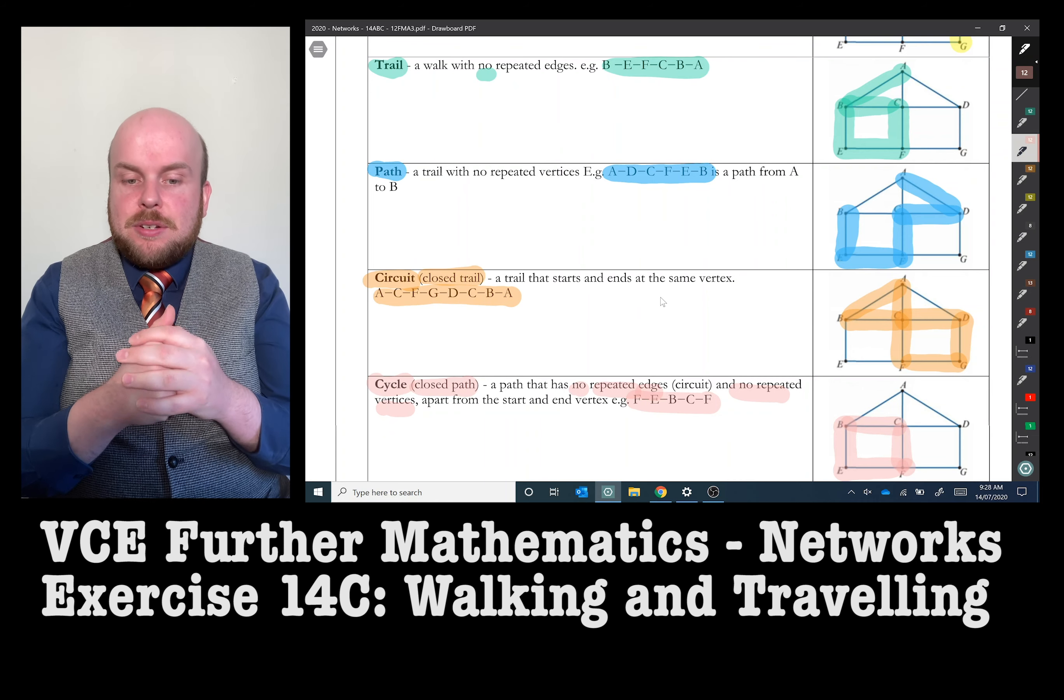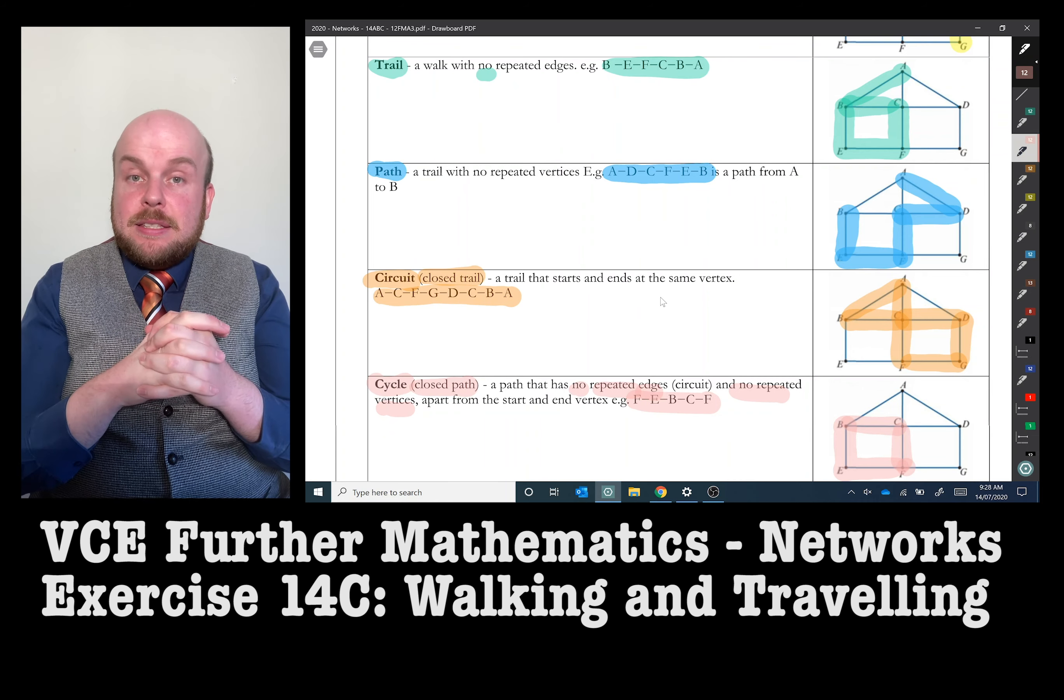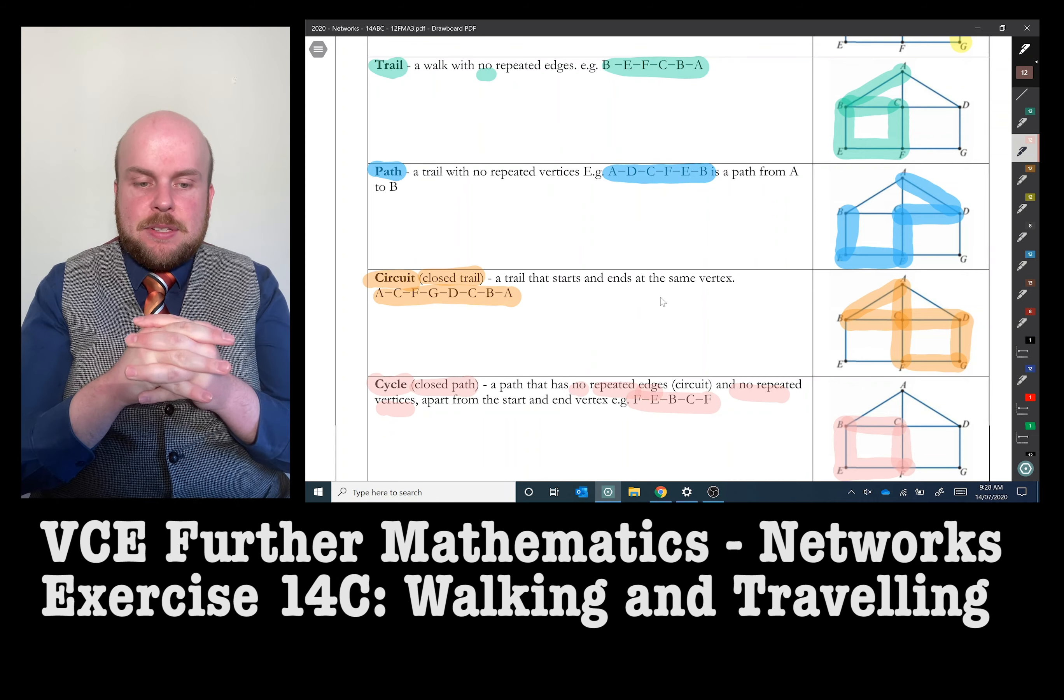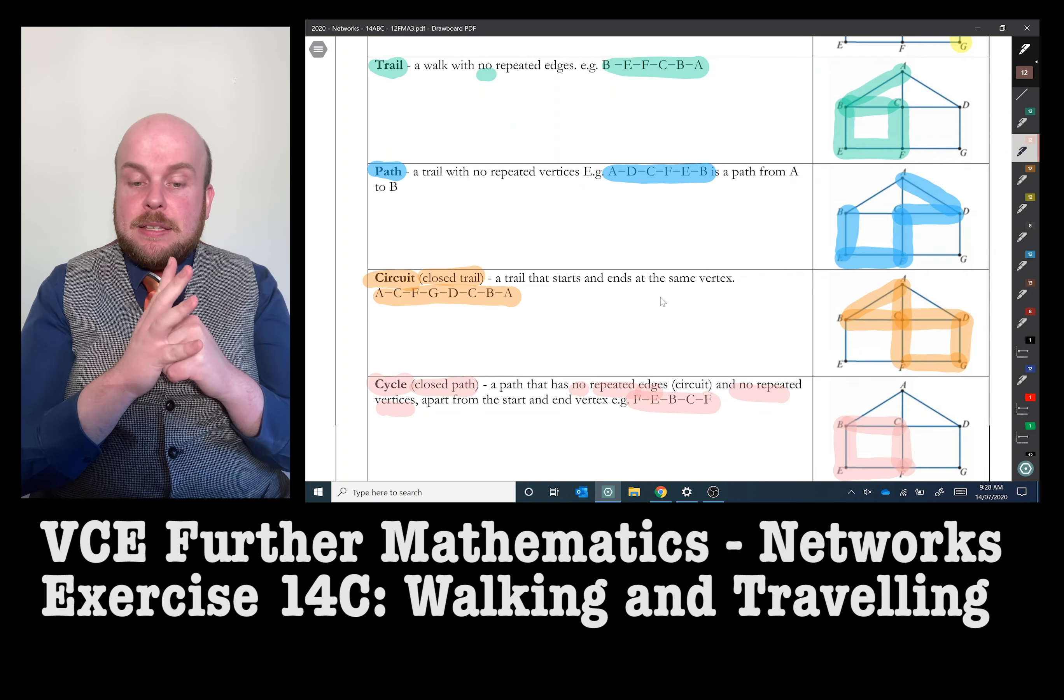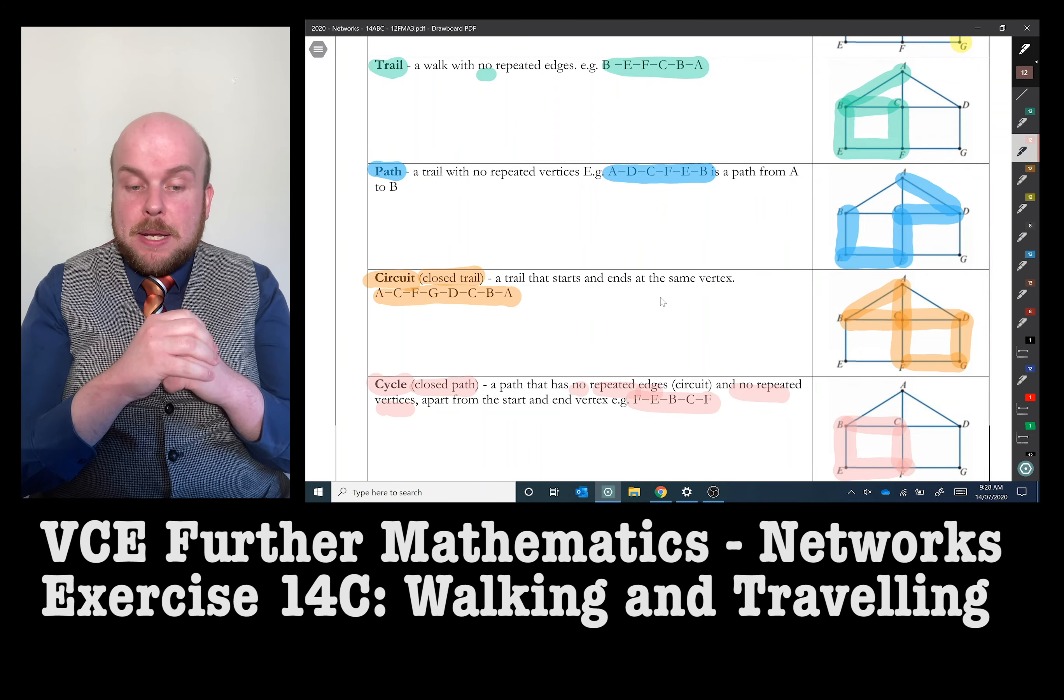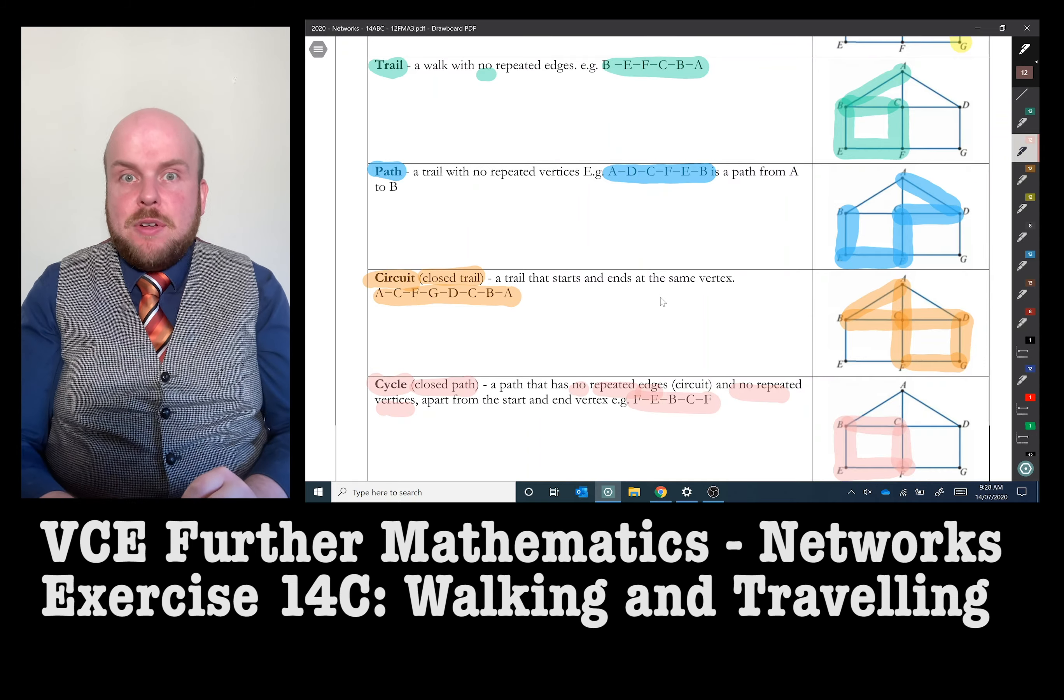A circuit is a trail that starts and ends at the same vertex. So for example, it's A-C-F-G-D-C-B-A is a circuit. Whereas a cycle is a path that has no repeated edges, no repeated vertices and starts and ends at the same vertex.